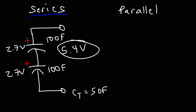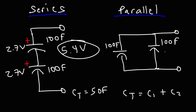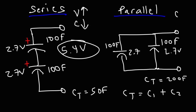To increase the capacitance, connect the two capacitors in parallel. The total capacitance is the sum of the individual capacitances — so two 100 farad capacitors give 200 farads total — but the voltage stays at 2.7 volts. So whether you connect in series or parallel, the total energy in both capacitors doubles. In series: voltage increases, capacitance decreases. In parallel: capacitance increases, voltage stays the same. The formula for total capacitance in series is: 1/CT = 1/C1 + 1/C2.